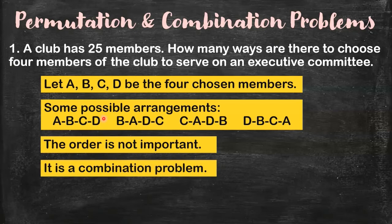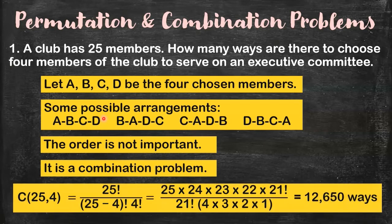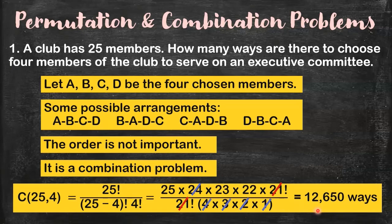Since the order does not matter, it is a combination problem. So we make use of the combination formula here. The 21 factorial cancels out, and 4 times 3 is 12, 12 times 2 is 24 — those cancel out too. All you need to compute is 25 times 23 times 22, and you get 12,650 ways.